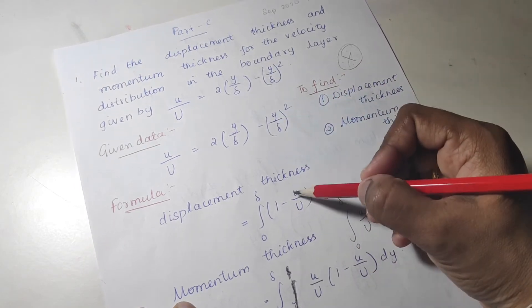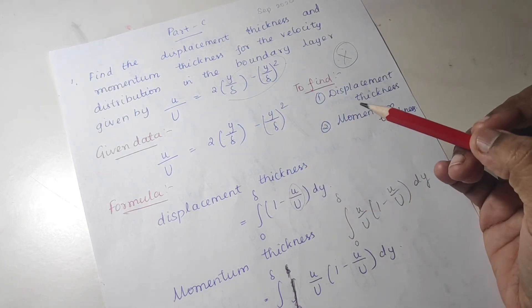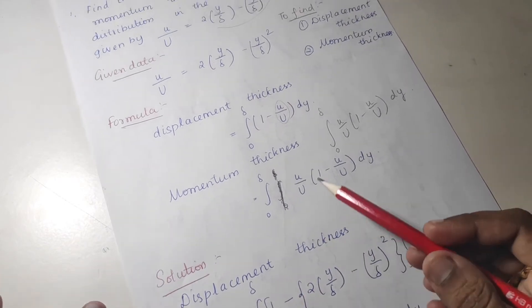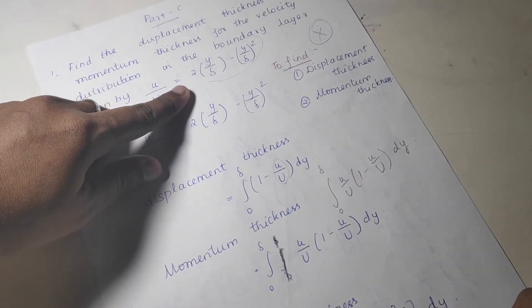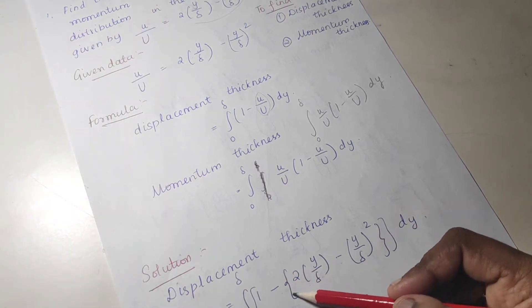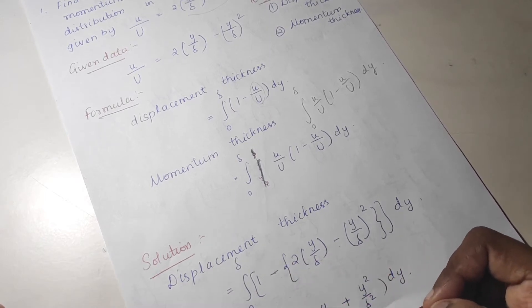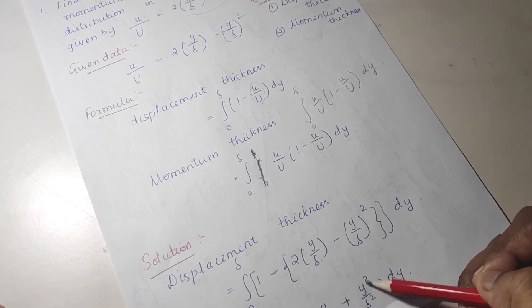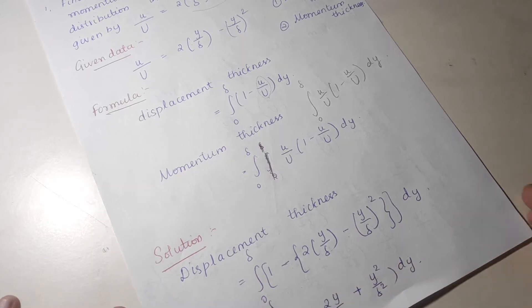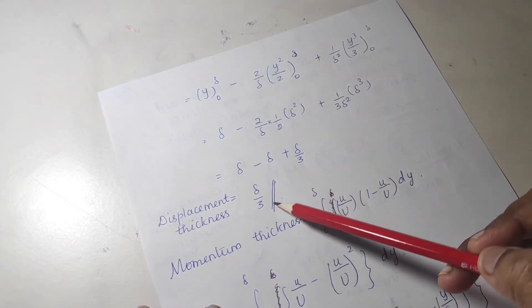What you have to do is substitute the value of u by U into the formula and simply integrate it. For displacement thickness: integral of 0 to delta of 1 minus 2y by delta plus y squared by delta squared into dy. After removing the bracket, the negative sign goes inside giving 1 minus 2y/delta plus y²/delta². Now perform the integration: 1 integrates to y, and you find the result.